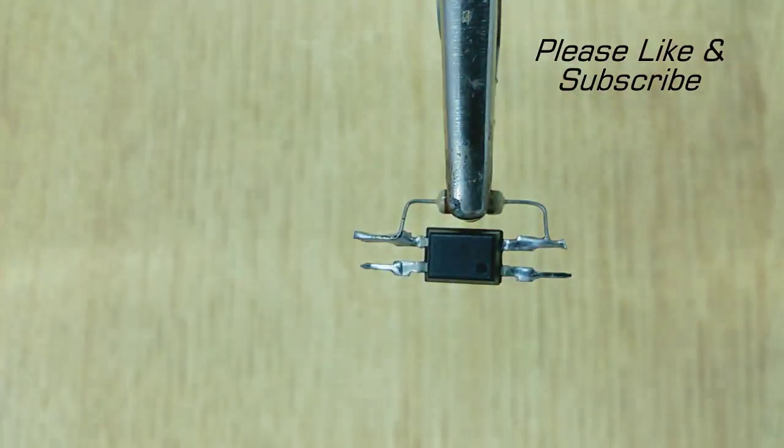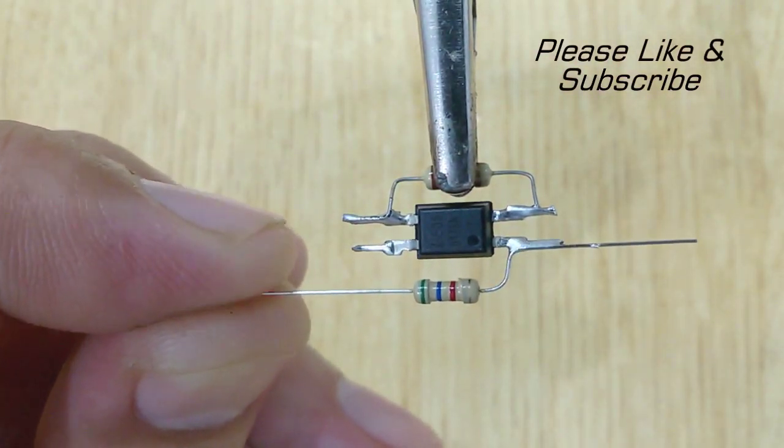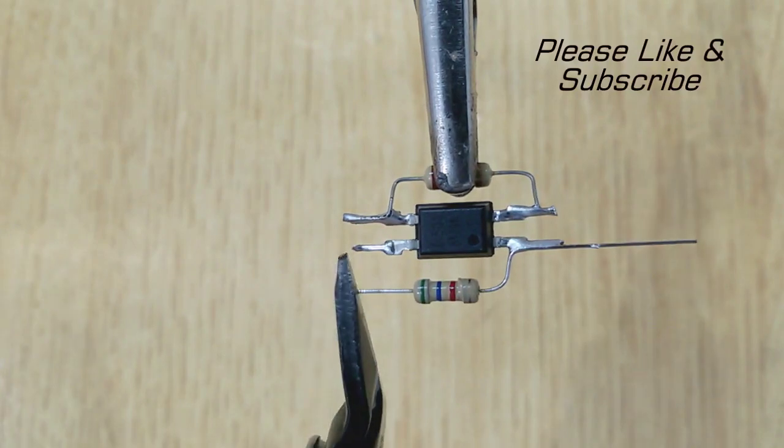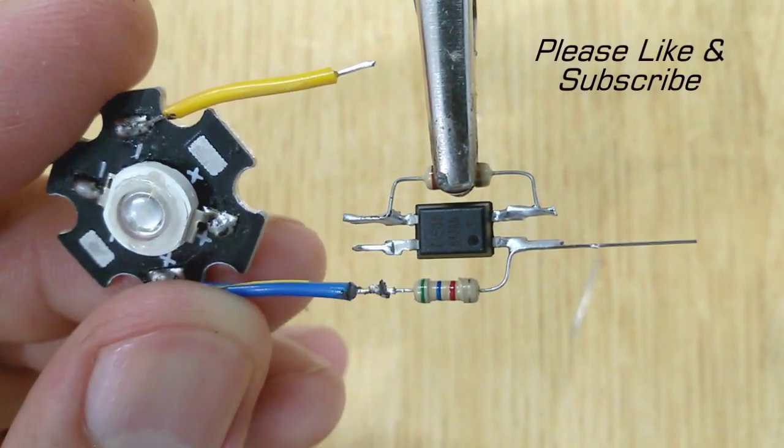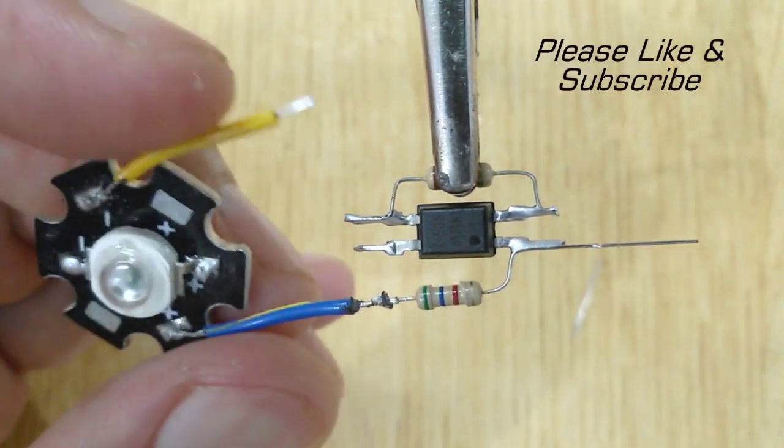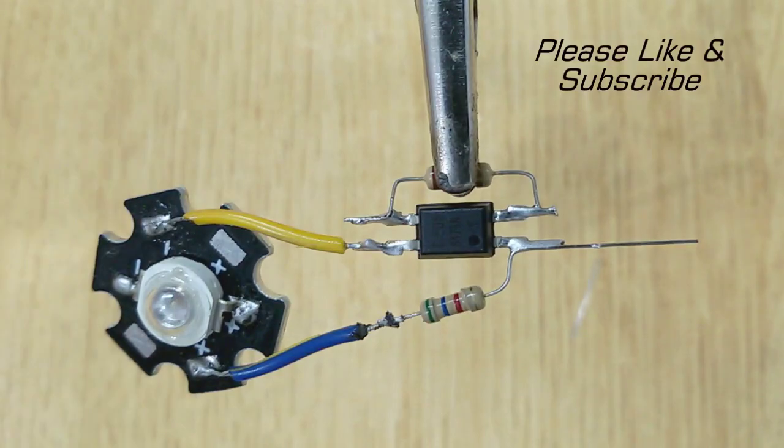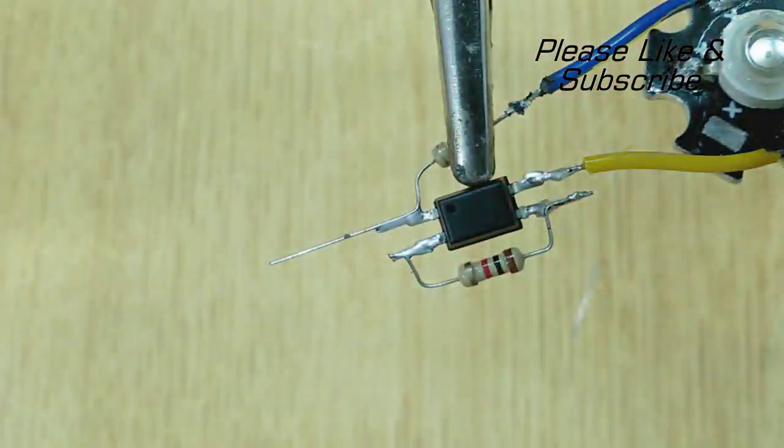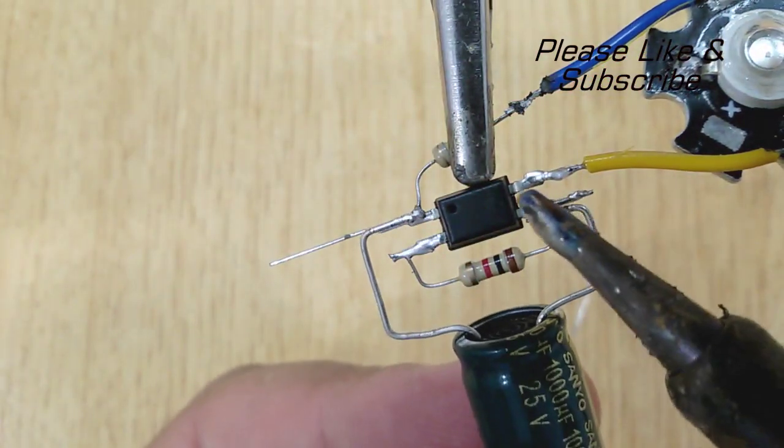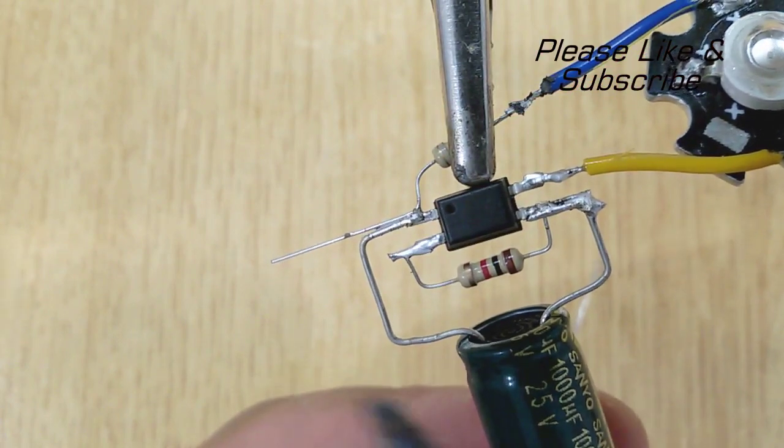After that solder 5.6K ohm resistor with the first pin of PC817. Now solder the positive pin of LED with the 5.6K ohm resistor and the negative pin of LED with the fourth pin of PC817. And at last solder 1000uF capacitor with the first and third pin of PC817.